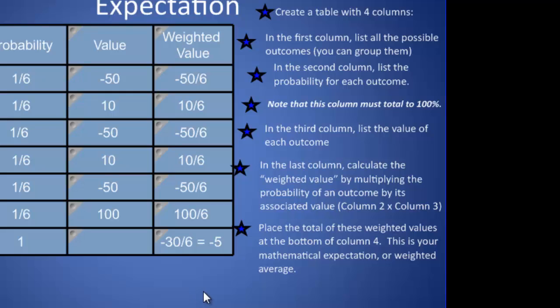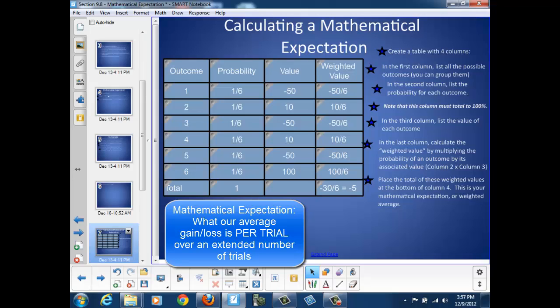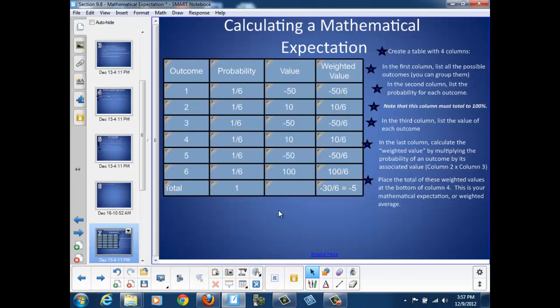So this value of negative 5 is my mathematical expectation, what I would expect to win or lose on average if I played this particular game over and over and over again.